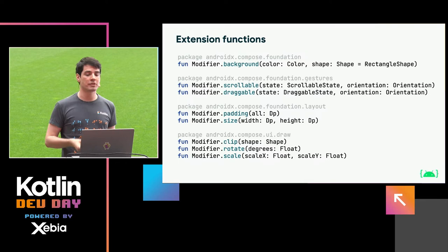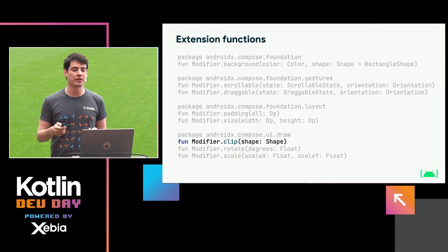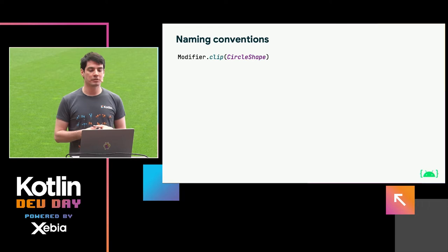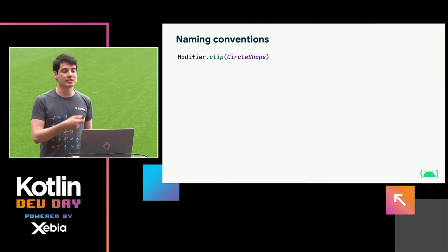Let's take a look at one of these as an example. Let's say we want to clip something using the clip modifier. It has a parameter which is a shape, and one of the values we could pass in is CircleShape. Looking at this API, what would we assume CircleShape is? It looks maybe like an enum value or maybe like an object, but if you're familiar with IntelliJ syntax highlighting, you'll know this is actually a property.